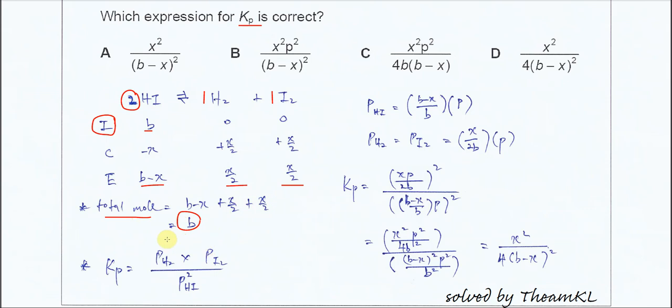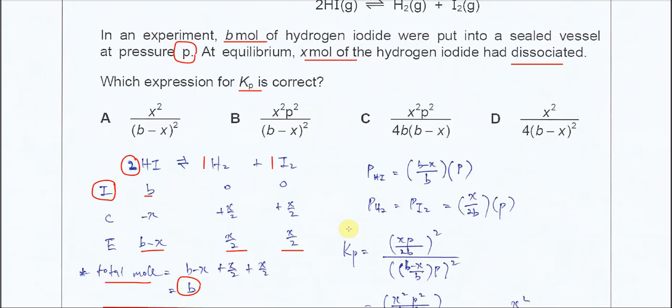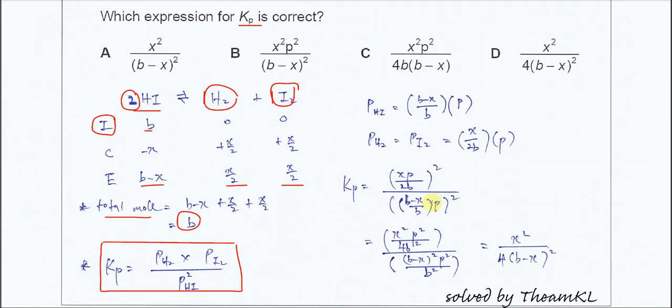After that we need to use the Kp expression to get the answer. So we know that Kp is equal to partial pressure of H2 times partial pressure of I2 over partial pressure of HI squared, because it's from the equilibrium. The products over the reactants. So therefore we need to get the partial pressure of all the species involved.